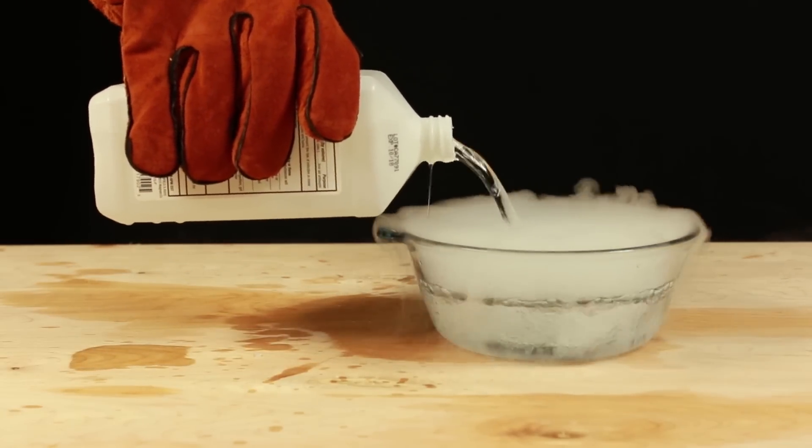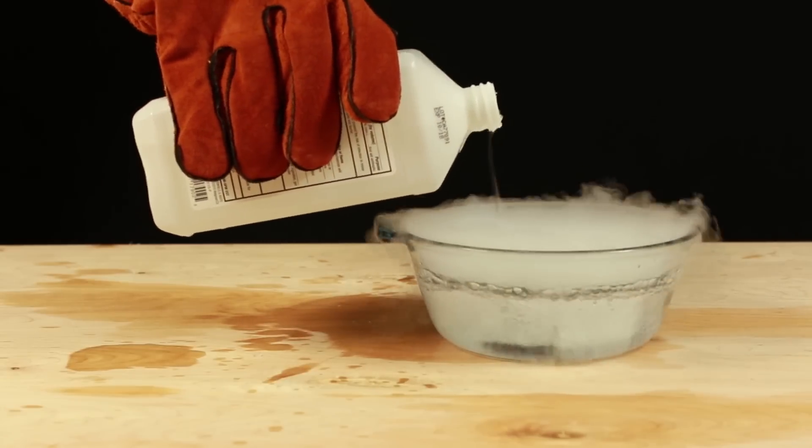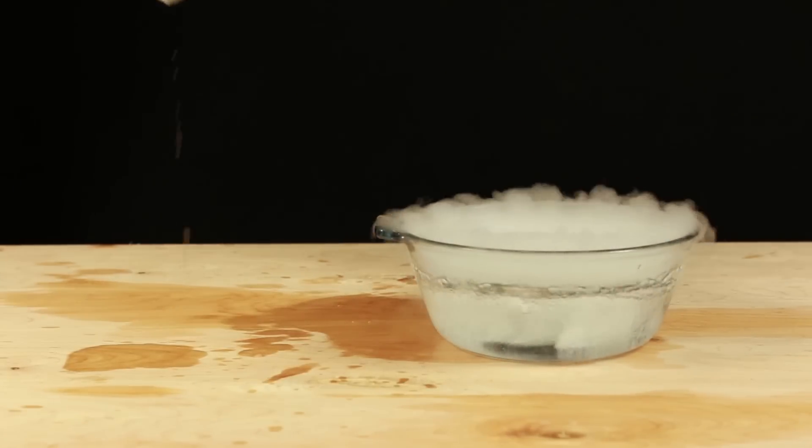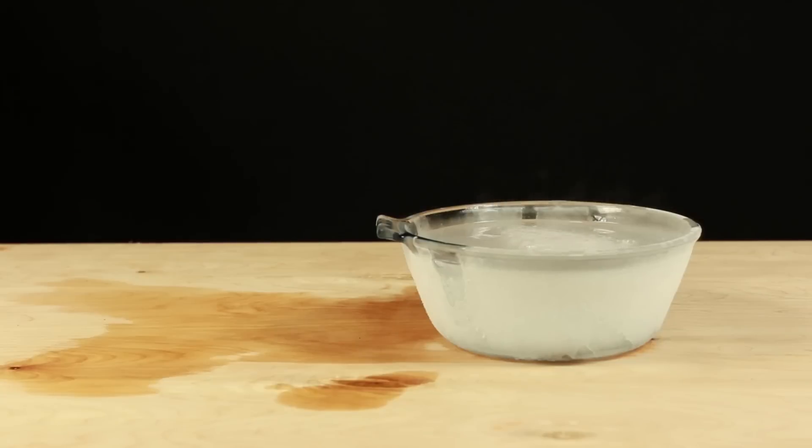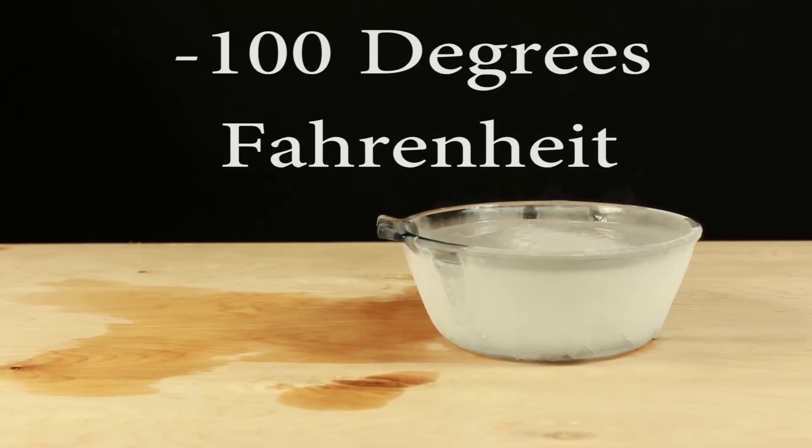The bowl will begin bubbling rapidly as the isopropyl alcohol cools down. After several minutes the bubbling will slow down and the isopropyl alcohol will reach a temperature close to negative 100 degrees Fahrenheit.